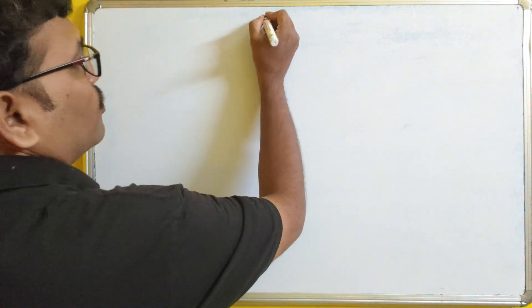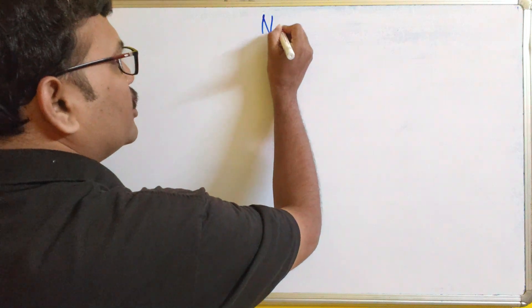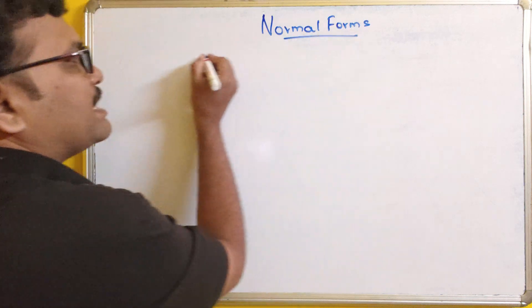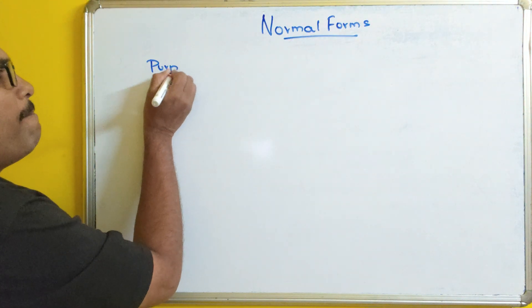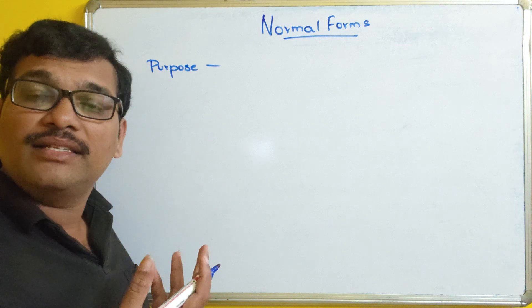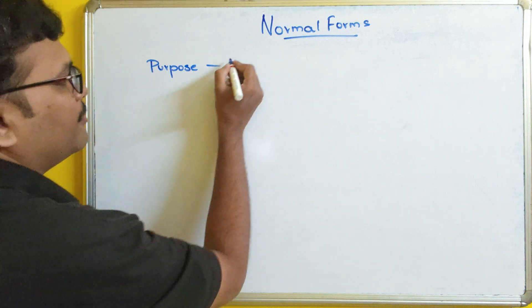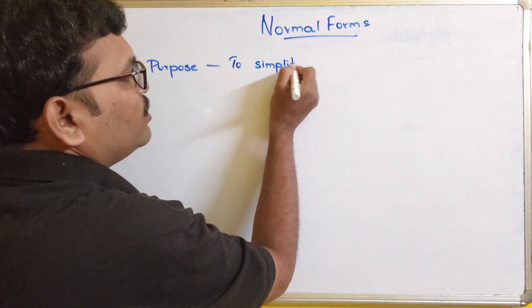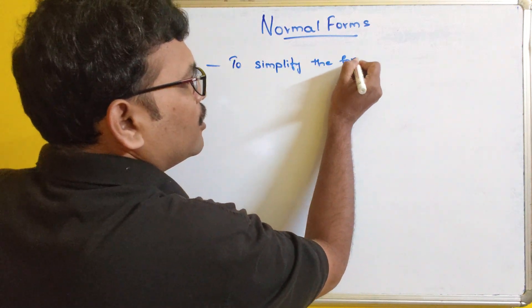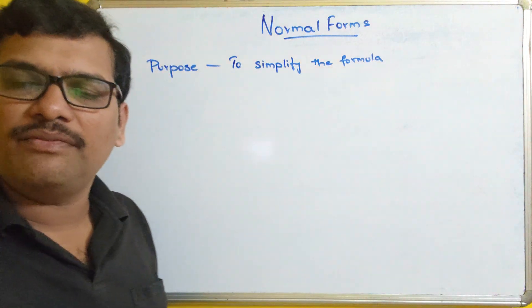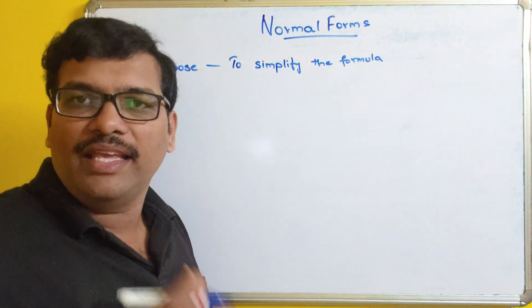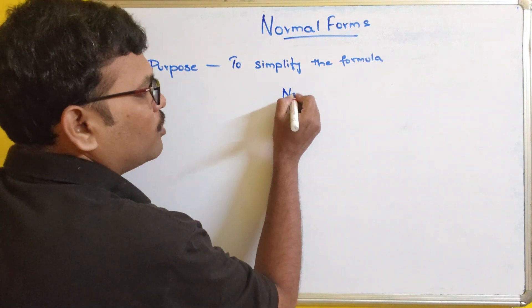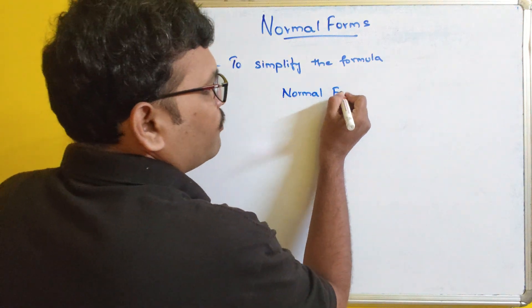So let us start the session. The main purpose of using these normal forms is to simplify the formula, and this simplification will be used in finding the logical equivalence. Normal forms are of two types.